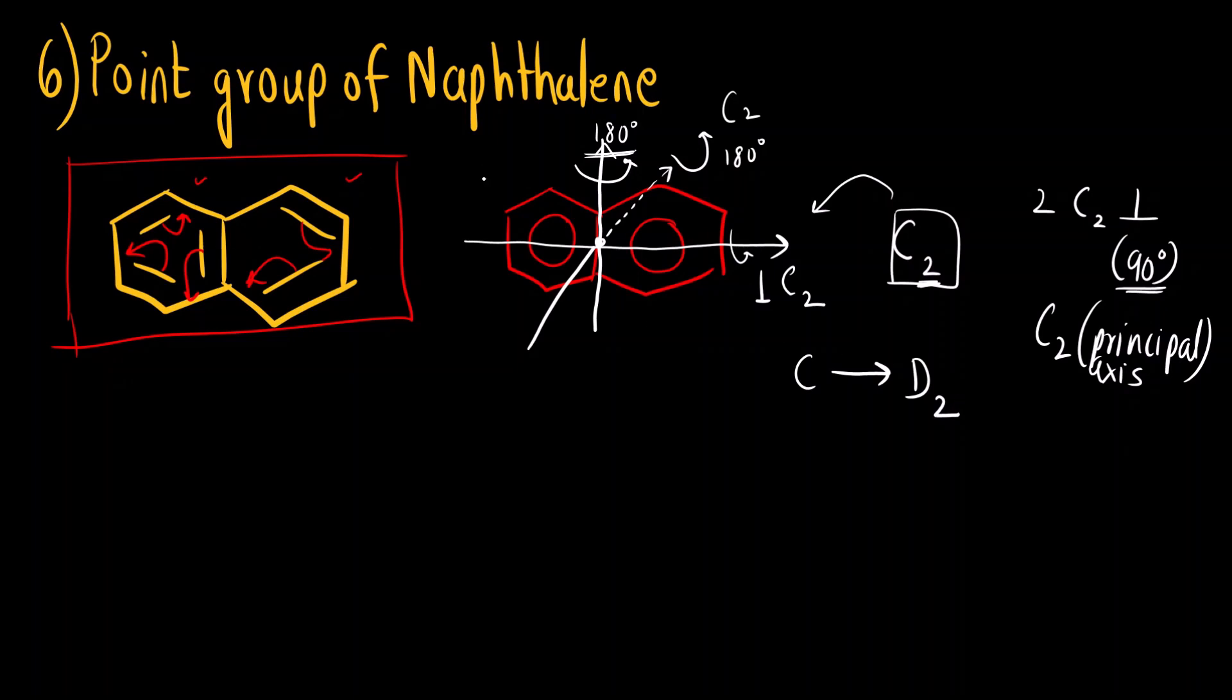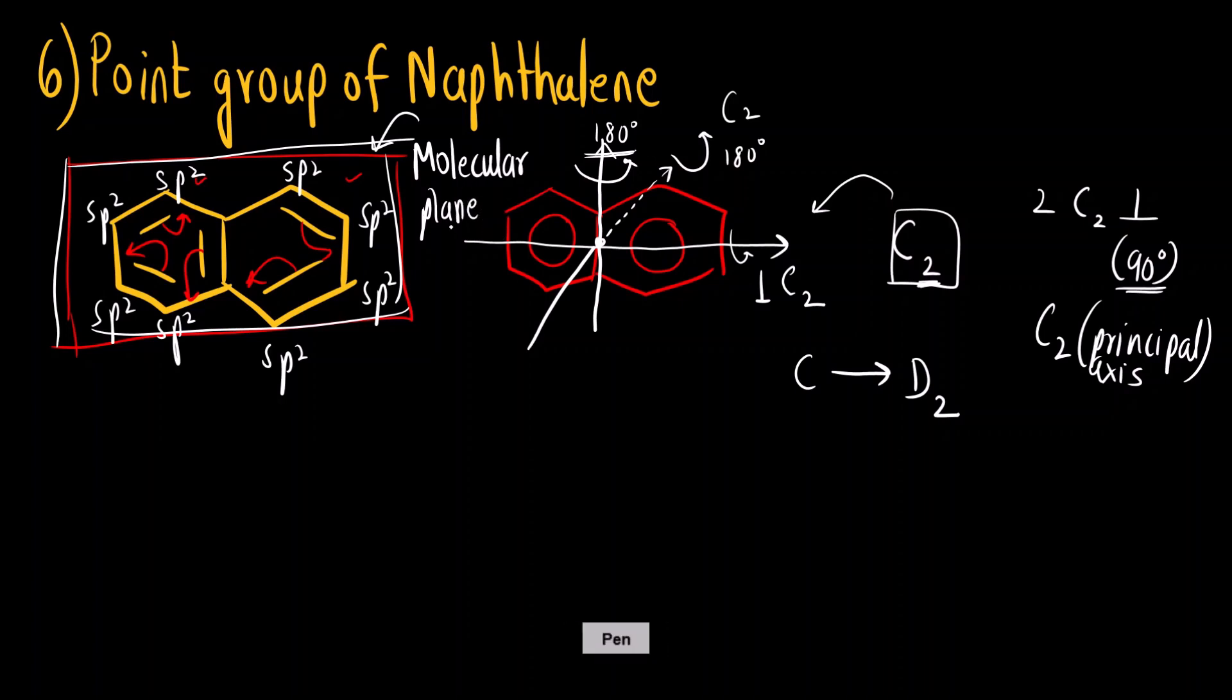And now if you see for this molecule this plane that I have drawn, all the atoms are in same plane. Why? Because all the carbon atoms are sp² hybridized. We know it is an aromatic compound and it is planar. So all the atoms are sp² hybridized. So if I pass this plane this is going to be the molecular plane and it is perpendicular to the principal axis.